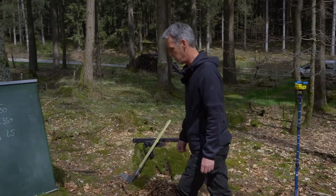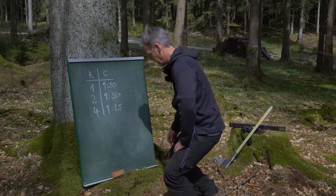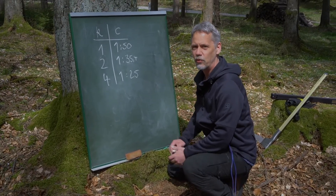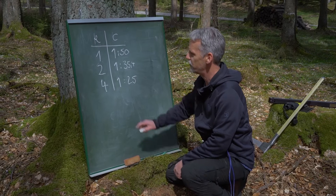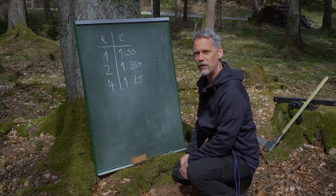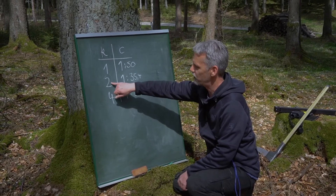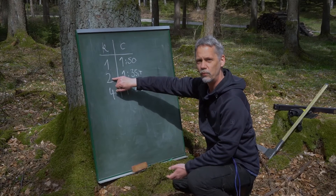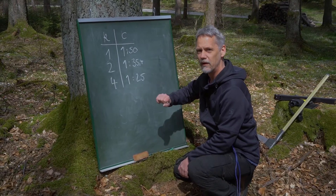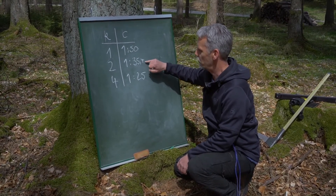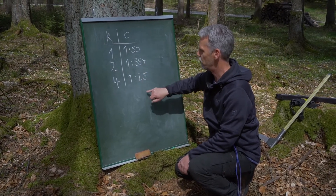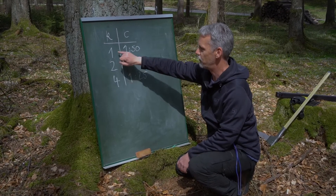I wrote them down here in our forest classroom — we have a blackboard, very old school. There are three counting factors that are typical and implemented in most devices: counting factor one, two, and four. Whenever a tree comes into our sample with a counting factor of two, for example, it represents two square meters per hectare of basal area. The critical distances are calculated with these relations: one to fifty, one to thirty-five point four, and one to twenty-five for the different counting factors.